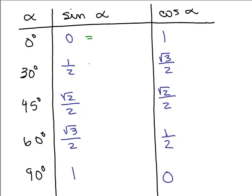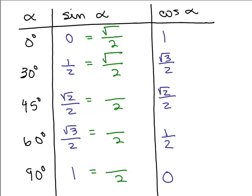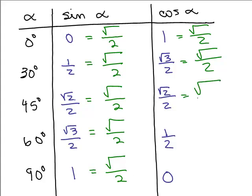Here is how you get these numbers — a little trick. You start off and you're going to make all these fractions with a 2 in the denominator. In the numerator, they're all going to have square roots. So you've got the square root of something all over 2. All of these — for both sine and cosine — are the square root of something over 2.